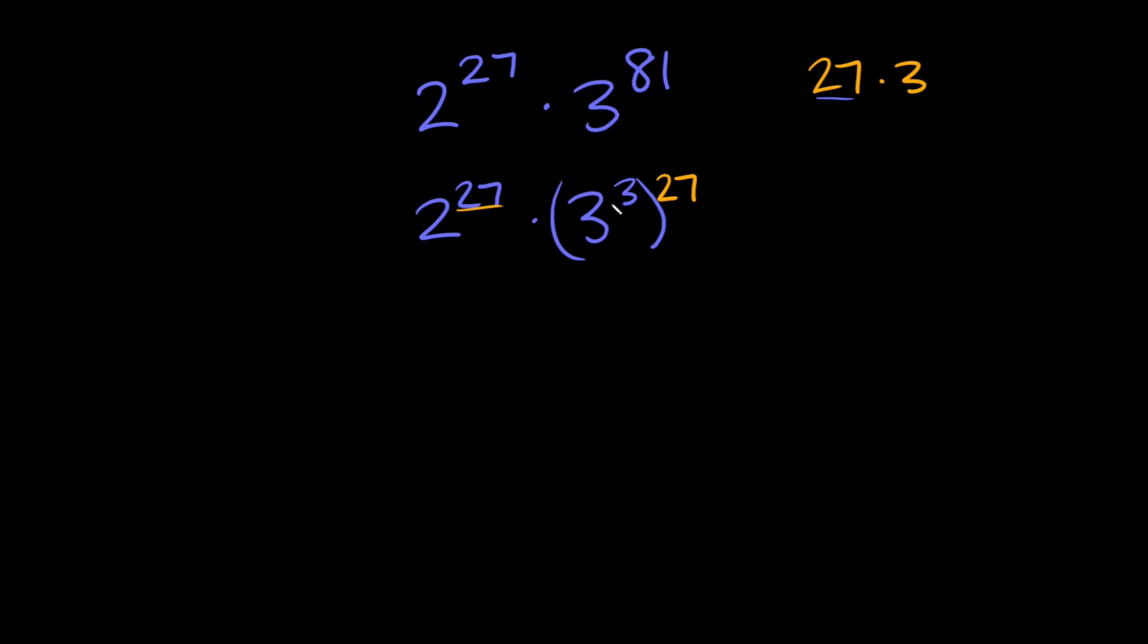So the next thing we can do is just simplify what's in our parentheses now. We have 3 cubed and 3 cubed is equal to 27, right? So let's bring everything down again. We have 2 raised to the 27th times, again this is equal to 27 what's in parentheses, and it's raised to the 27th power also.